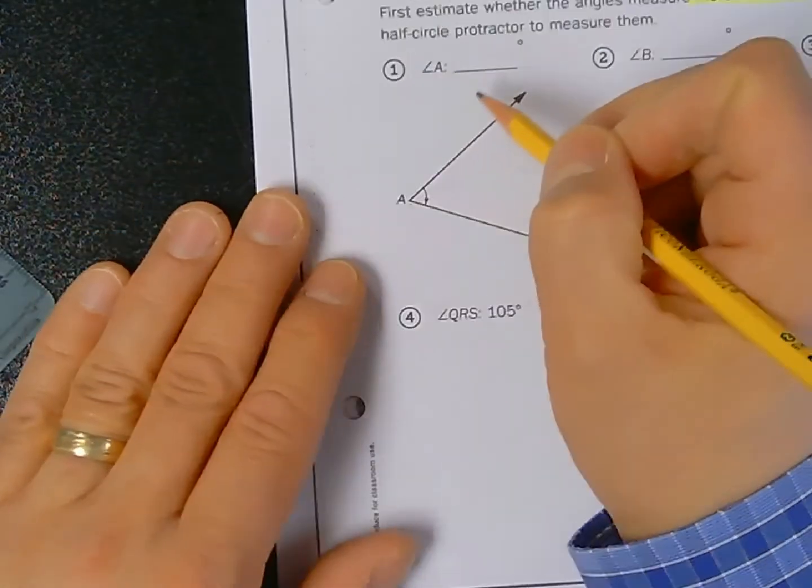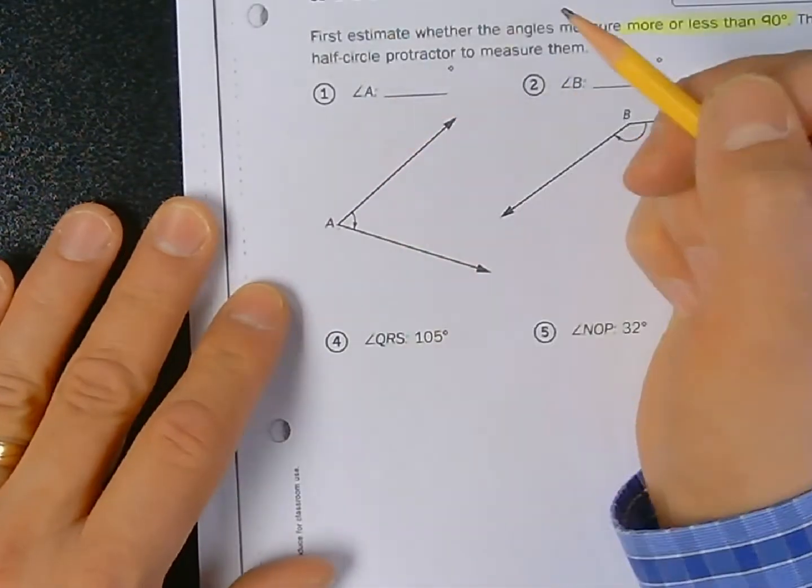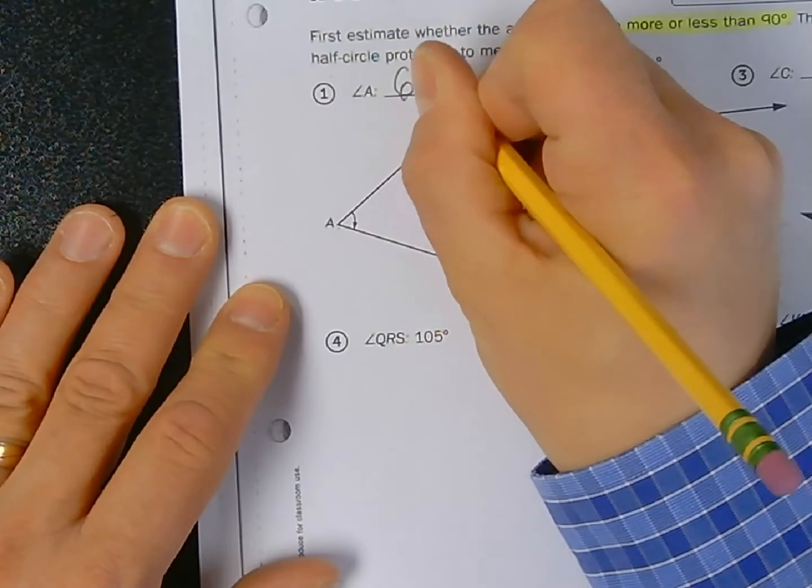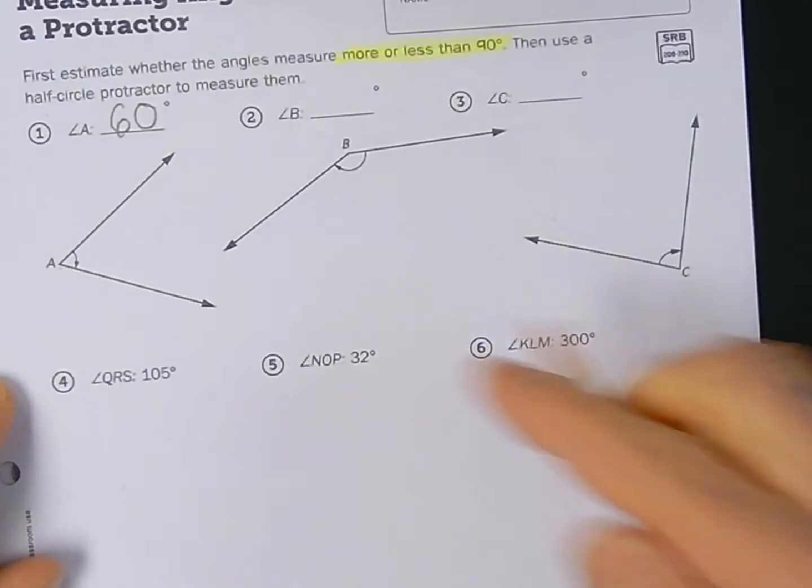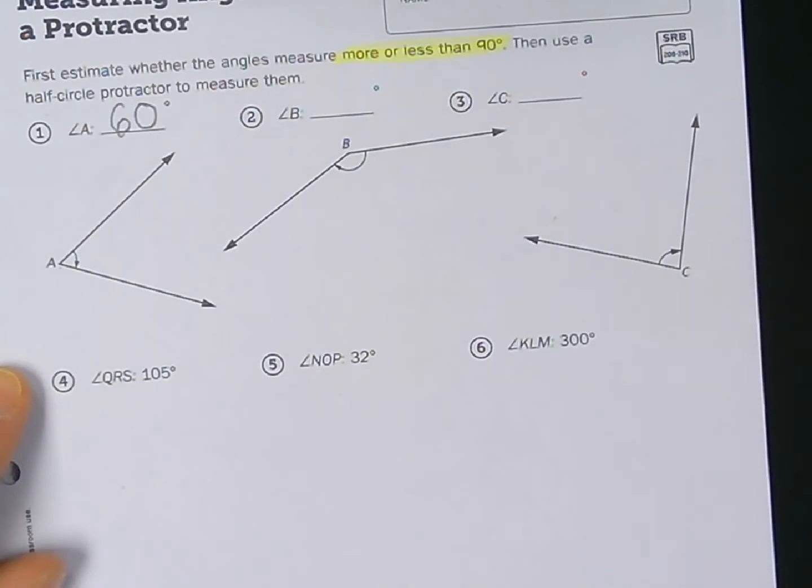So one or angle A is about 60 degrees. And then you would use that same process for measuring angle number two and angle number three.